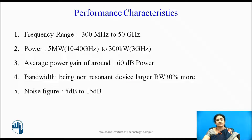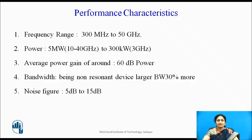The performance characteristics of these devices: the operating frequency range varies from 300 MHz to 50 GHz. The power range is from 5 MW at a frequency range of 10 to 40 GHz, to 300 KW at 3 GHz. The average power gain is around 60 dB. Bandwidth is more than 30 percent, and the noise figure ranges between 5 dB to 15 dB.